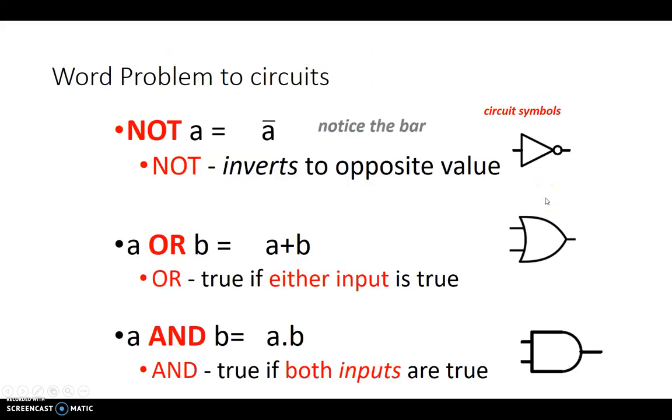To quickly summarize now, we can go from word problems to circuits using NOT, OR, and AND keywords. NOT inverts the input to the opposite value. So if it's true, then we produce an output of false. So here is the logic symbol or a circuit symbol for NOT. If we want to write this algebraically, we write that A with a bar over it to represent NOT in Boolean, we call it the Boolean expression.